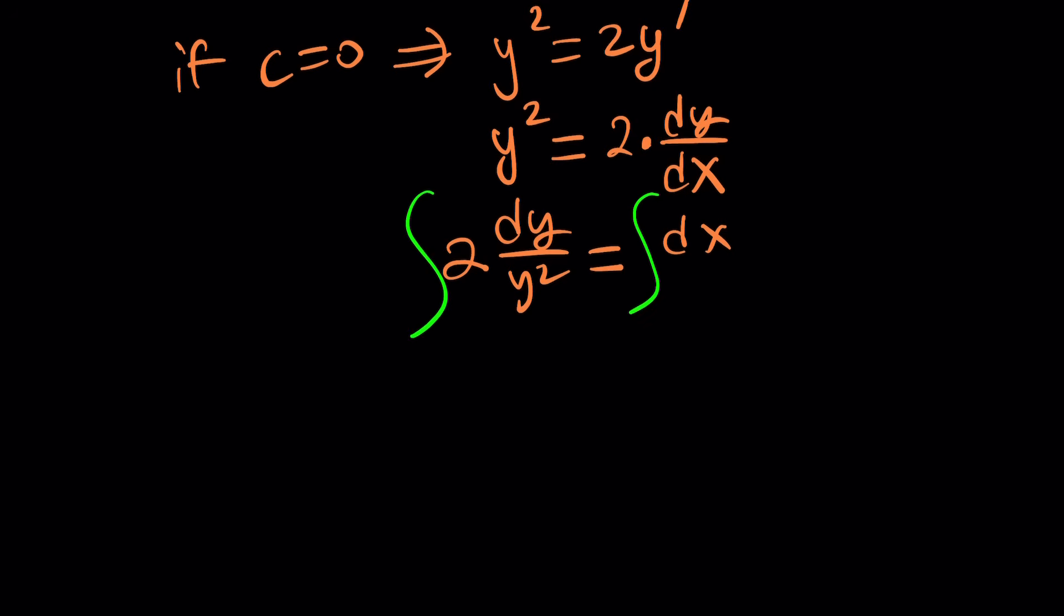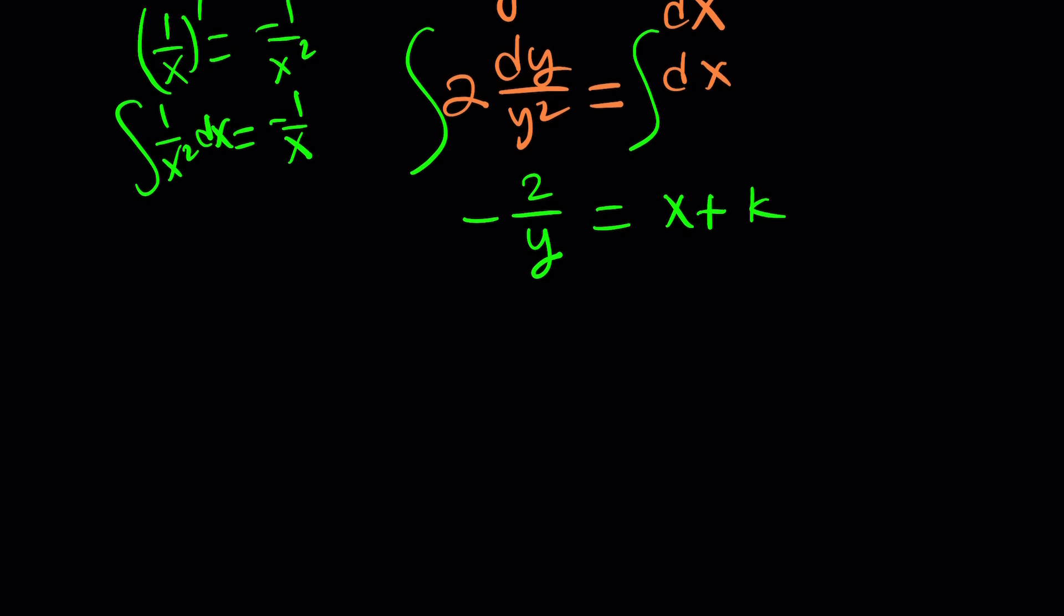Now we're going to go ahead and integrate both sides and when we do something miraculous is going to happen because we're going to get the following. Now what is the integral of 2 over y squared? Or in other words what about integrating 1 over y squared? Well if you think about the derivative of 1 over x it's negative 1 over x squared. So if you integrate 1 over x squared you should be getting negative 1 over x plus the constant. Let's write the constant now. But this is 1 over y squared. Do we have to use chain rule? No because you have dy. You see integration is with respect to y. So this becomes negative 2 over y. You get the idea? And that is equal to x plus a constant. Which constant should we use? K. Because you already used c. You can't use it again.